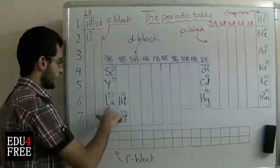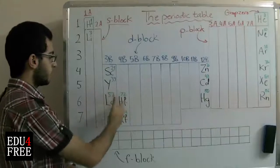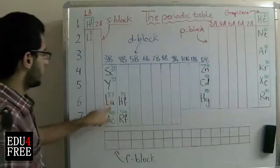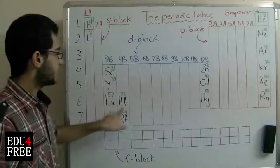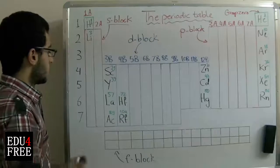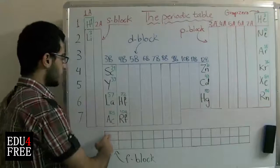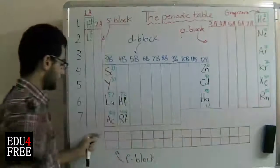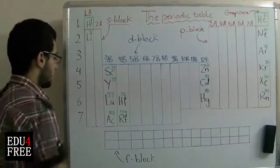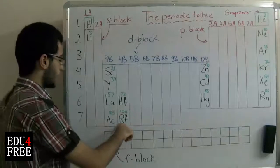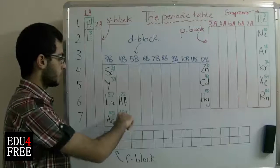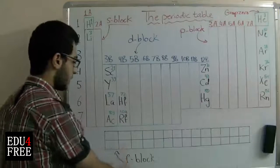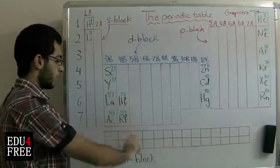If we look at lanthanum and the element after lanthanum, which is called hafnium, we find that the atomic number of lanthanum is 57 and hafnium is 72. So between lanthanum and hafnium is where the first series of the F block is found. It's the same situation between actinium and rutherfordium — actinium is 89 and rutherfordium is 104, so there are 14 elements between them, making the second row of the F block.